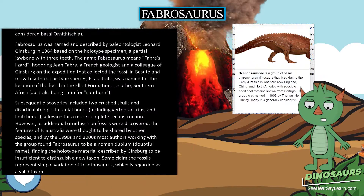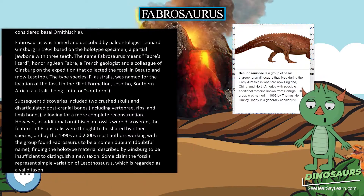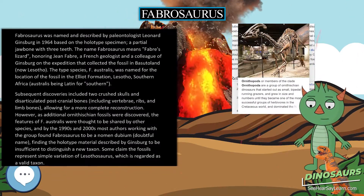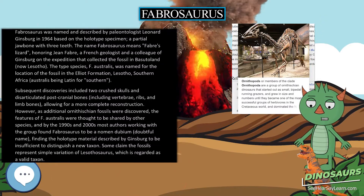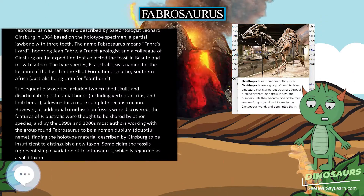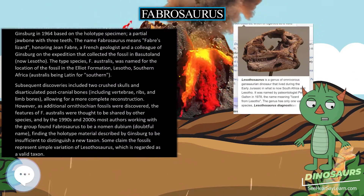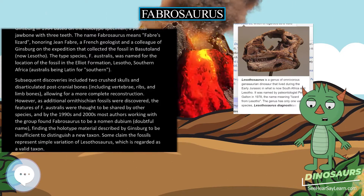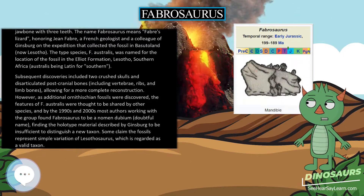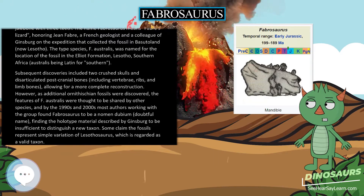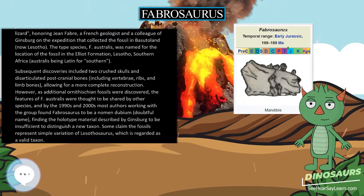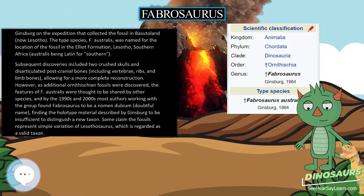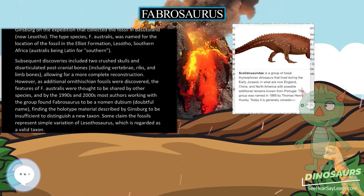However, as additional Ornithischian fossils were discovered, the features of F. Australis were thought to be shared by other species, and by the 1990s and 2000s most authors working with the group found Fabrosaurus to be a nomen dubium — a doubtful name — finding the holotype material described by Ginsberg to be insufficient to distinguish a new taxon. Some claim the fossils represent simple variation of Lesothosaurus, which is regarded as a valid taxon.